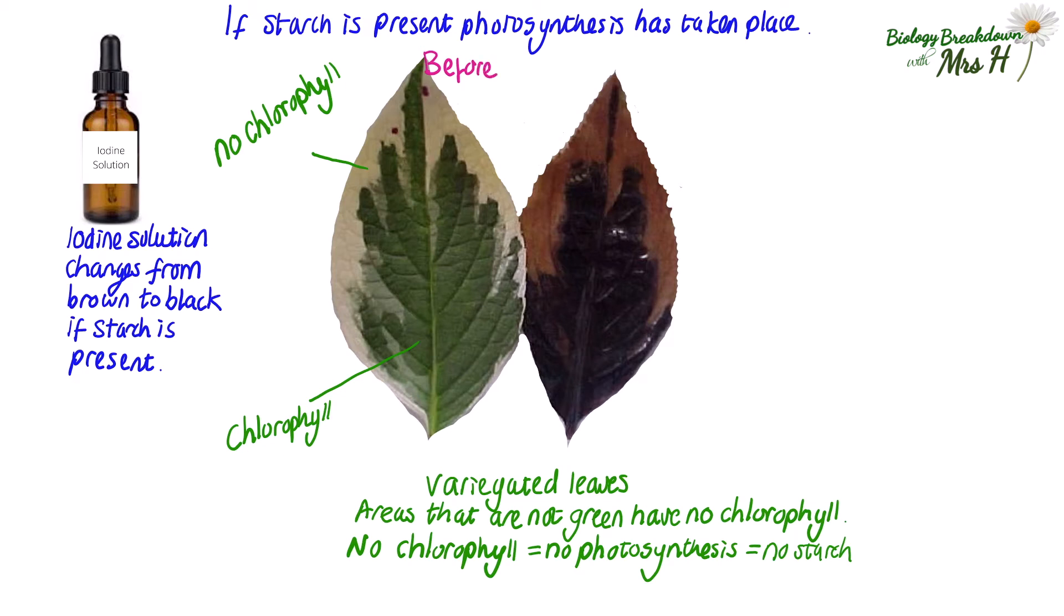The leaf on the left is before the starch test. Testing a leaf for starch requires you to boil the leaf in ethanol to remove the chlorophyll, rinse it, and then gently break the cell walls down. You can look the method up. But on the right is the leaf after it has been through the process. And you can see that there is no starch present where there is no chlorophyll and there is starch present where the chlorophyll was.